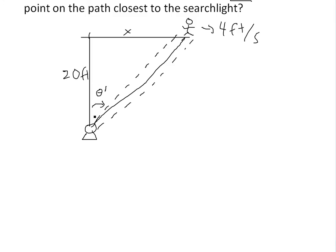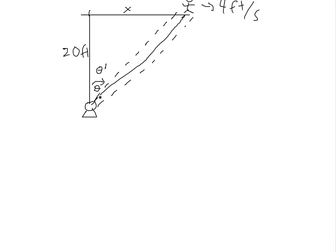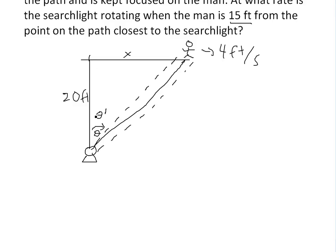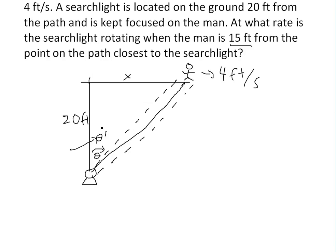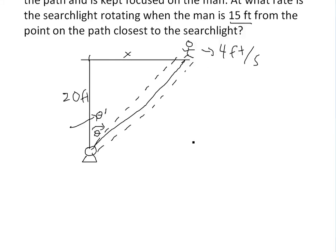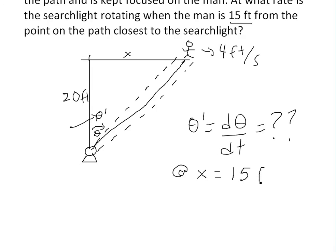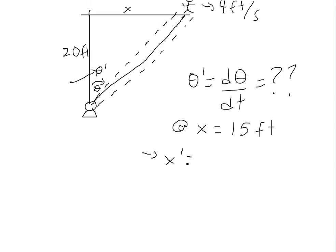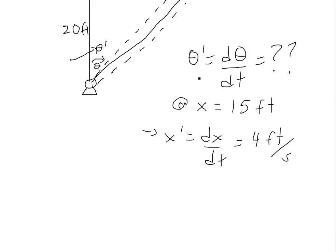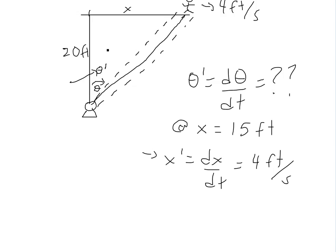We are looking for d theta over dt. We know theta here but we're looking for the change in the angle. The way to solve this is to basically relate theta — this rate of change of the angle — with something we know, which is the rate that the guy is walking. So we're looking for theta prime, which equals d theta over dt. At this moment, x equals 15 feet. We know x prime equals dx/dt equals 4 feet per second. The idea is to relate this rate with the rate we know, using trigonometry.